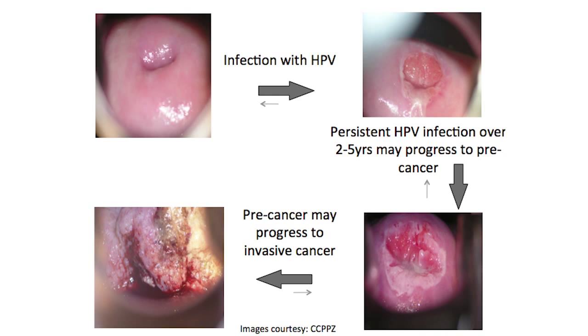But if a woman develops the human papillomavirus and cannot clear it, it then, over two to five years — and much faster if she's HIV-infected — can develop into a precancerous lesion. This is the purpose of cervical cancer screening, to detect this lesion when it is precancerous. But if this is not detected and we can't screen for that, then 10 to 15 years later — and again, more rapidly if she's HIV-infected — it develops into cervical cancer, and then it spreads throughout the pelvis, the lungs, et cetera.